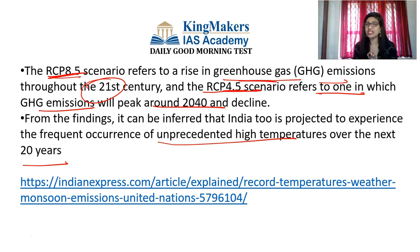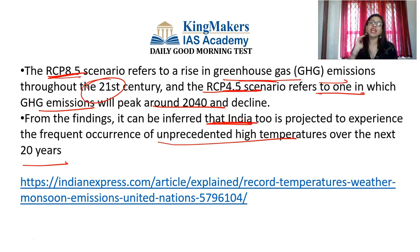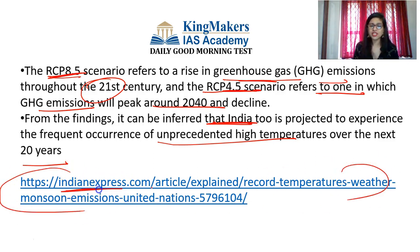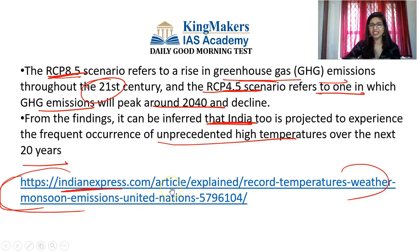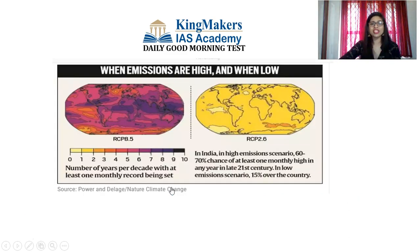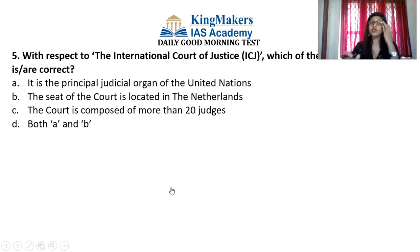The 15 judges of the ICJ are elected for terms of nine years by the UN General Assembly and the Security Council. The court is assisted by a registry, which is the administrative organ. The official languages of the ICJ are English and French. The role of the court is to settle legal disputes submitted by states in accordance with international law, and to give advisory opinions on legal questions referred by authorized UN organs and specialized agencies.